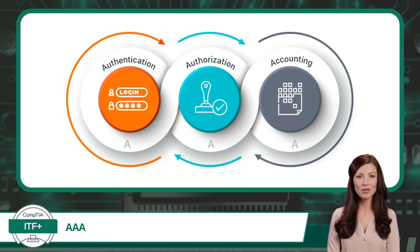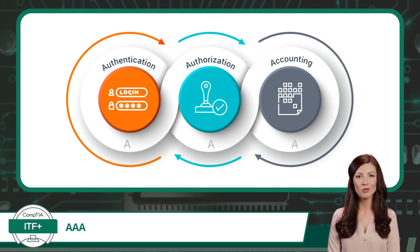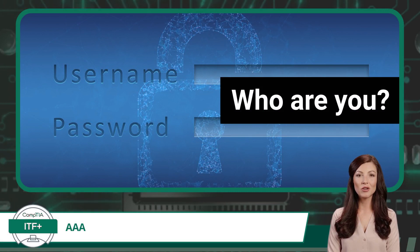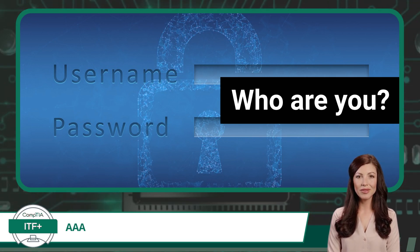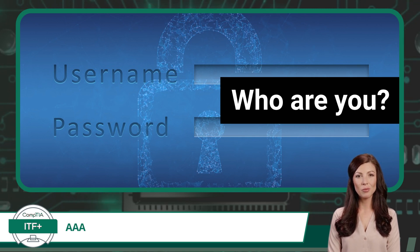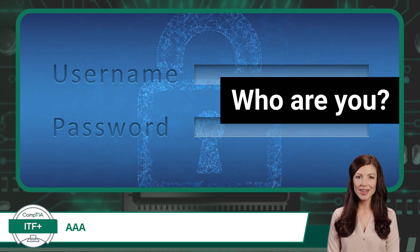Hopefully this little explanation keeps you from getting these two concepts mixed up. Next I will define each component of the AAA concept, starting with authentication. Imagine you're trying to log into your computer. The system asks for your username and password. It wants to verify that you are who you claim to be. In IT terms, this process is called authentication. It's the act of confirming the truth of an attribute of a single piece of data or entity. In simpler words, it's like asking: who are you?